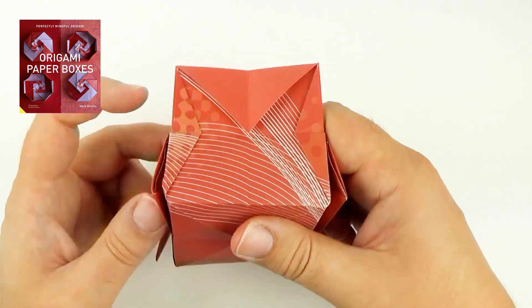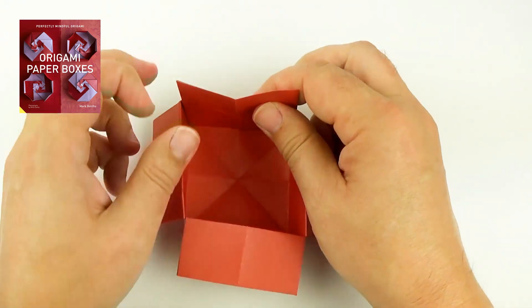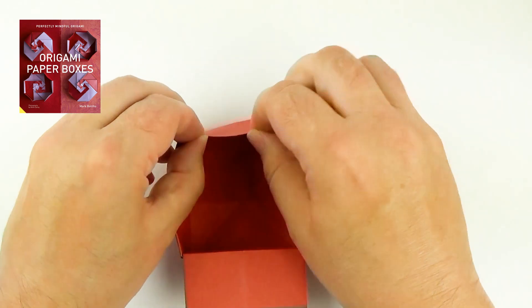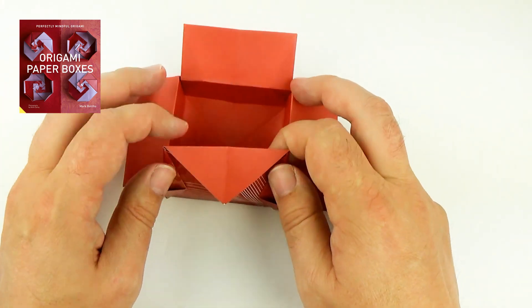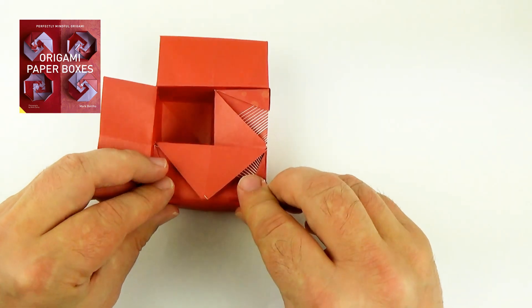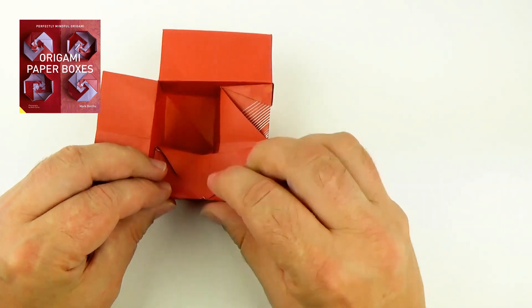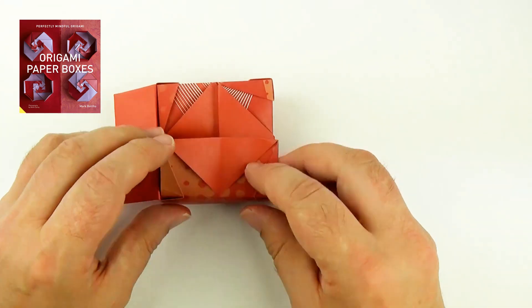So you see the box shape from here. And fold the corner over. And over again. And over again.